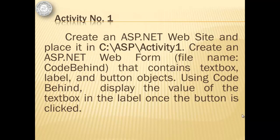We will do only one activity for this tutorial. In this activity, we will create an ASP.NET website and place it in folder C:\ASP\activity1. Then we will create an ASP.NET web form with file name Code Behind that contains a text box, label, and button objects. Using Code Behind, we will display the value of the text box in the label once the button is clicked.